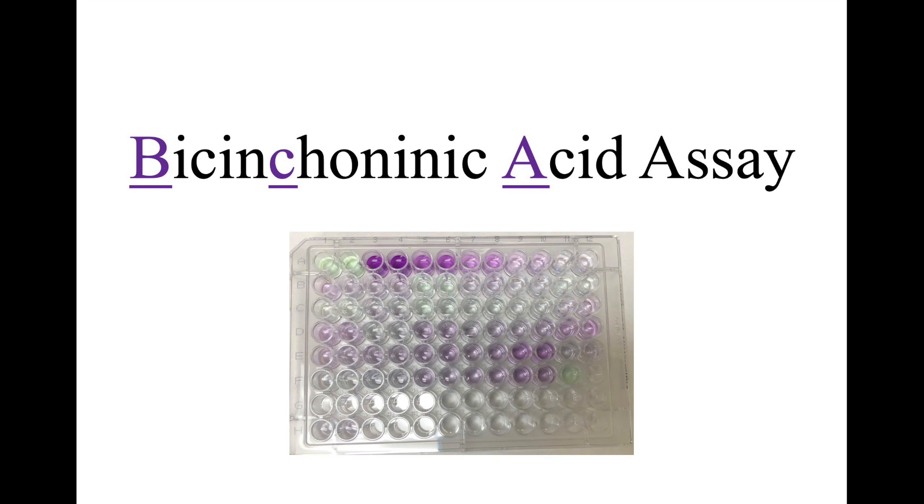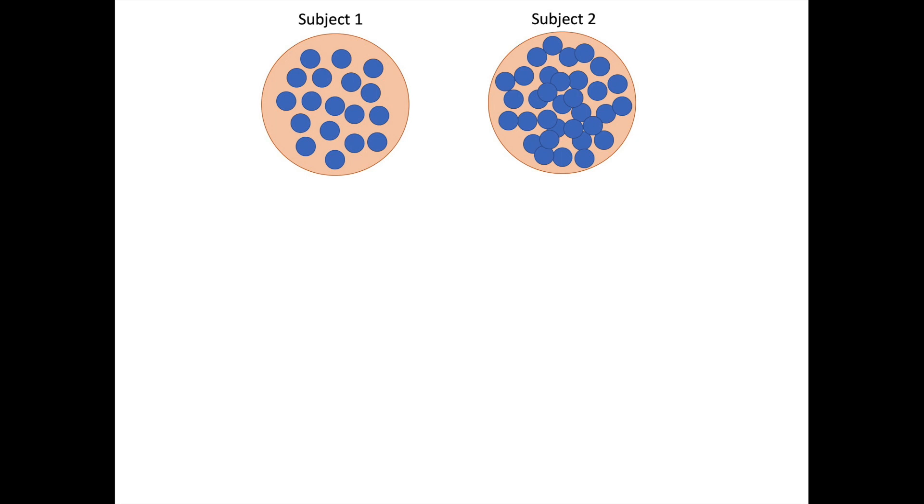This is important because when I grow up two subjects in dishes, one dish might have slightly more cells than the other. That dish, like subject 2 in this example, would then have more protein because each cell is filled with protein. So having more cells means that there is more protein. So if I'm interested in knowing which subject has more of protein A, and let's say that protein is linked to diabetes risk, it might seem like subject 2 has more of protein A. But maybe that is because there was just more overall protein since there were more cells in the dish.